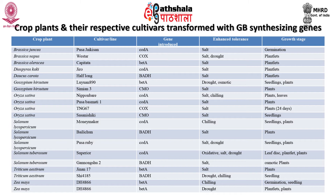Crop plants and their respective cultivars can be transformed with glycine betaine-synthesizing genes. Glycine betaine is a quaternary ammonium compound, electrically neutral over a wide range of pH values, and is an excellent solvent in water. Glycine betaine has three methyl groups with a quaternary ammonium group enabling its interaction with both hydrophobic and hydrophilic compounds to stabilize membrane proteins. Several species of plants, algae, and microbes synthesize glycine betaine.